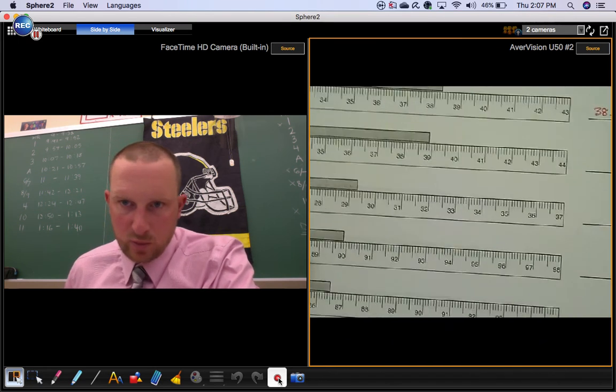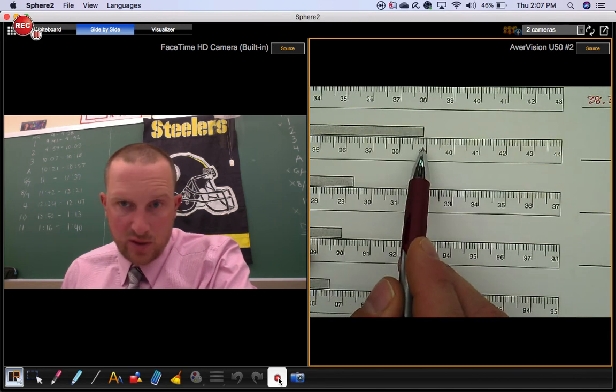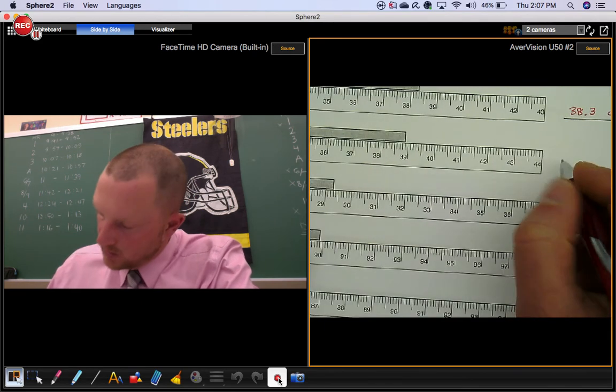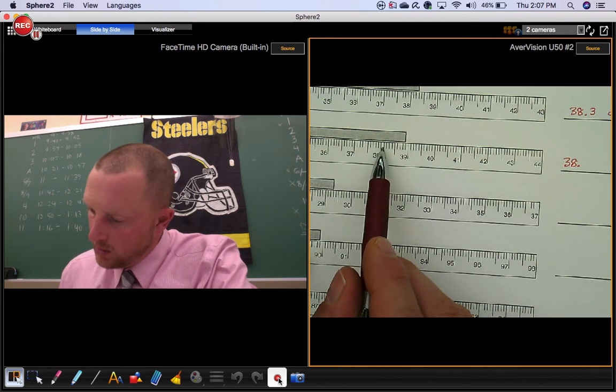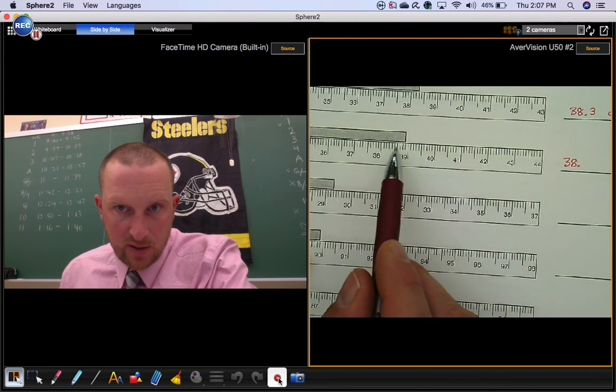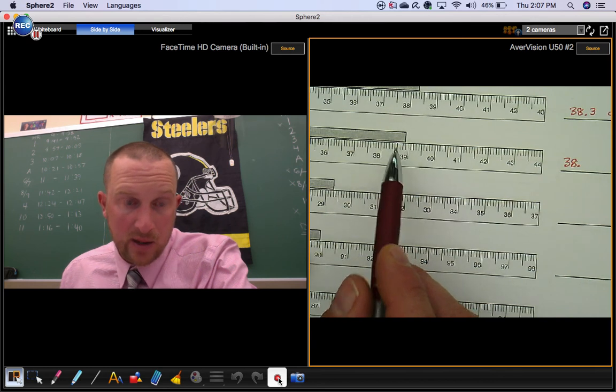Okay we'll do one more. This next one is almost 39 so it's less than 39. So again it's going to be 38 point something. Now we know there's ten little spaces in between the 38 and 39 so if you want to you can count backwards from 39.